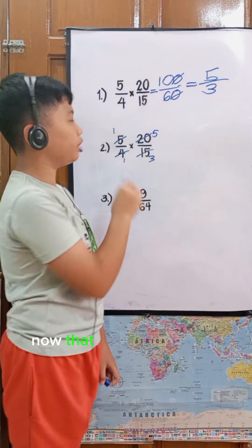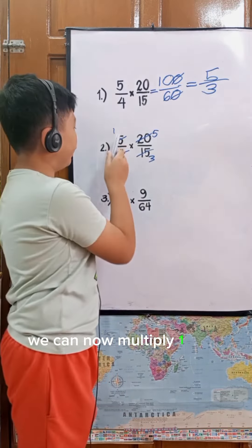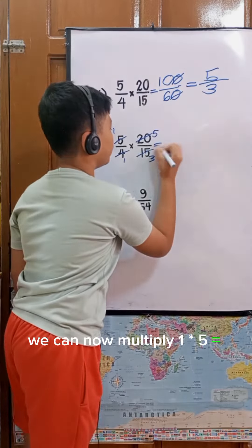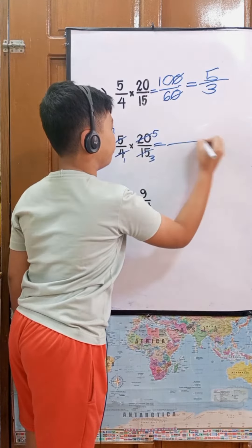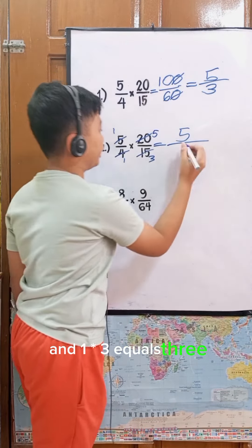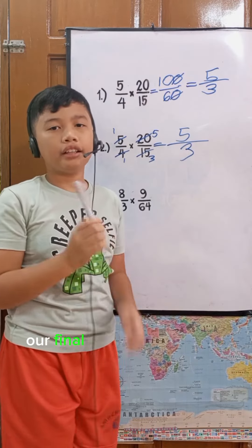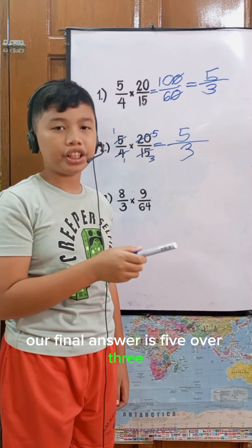Now that we've simplified all of these, we can multiply. 1 times 5 equals 5, and 1 times 3 equals 3. Our final answer is 5 over 3.